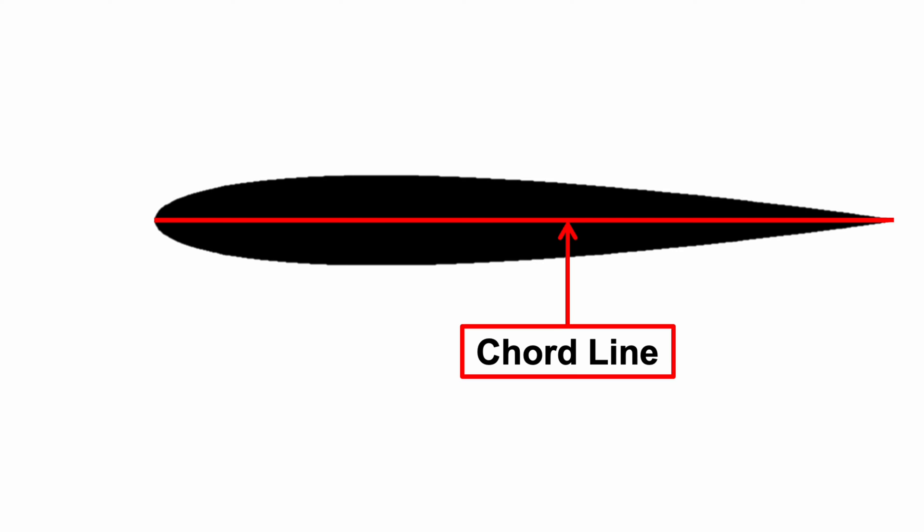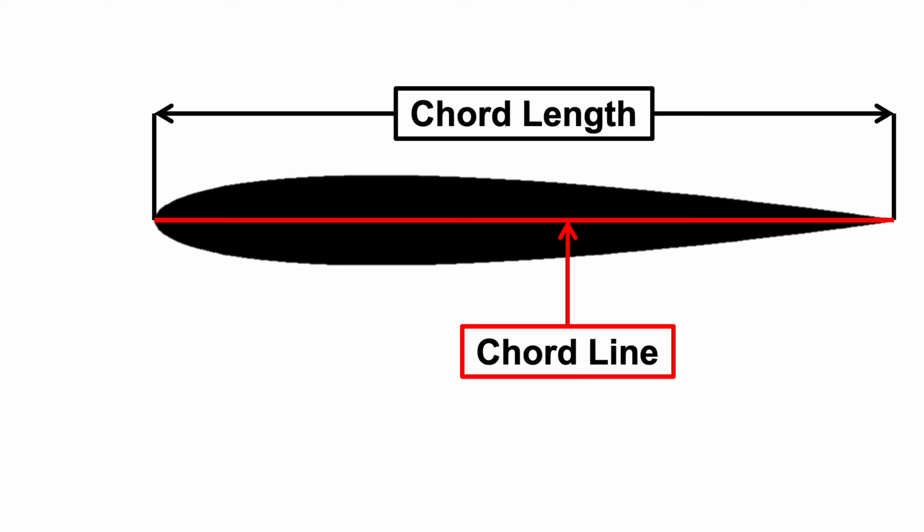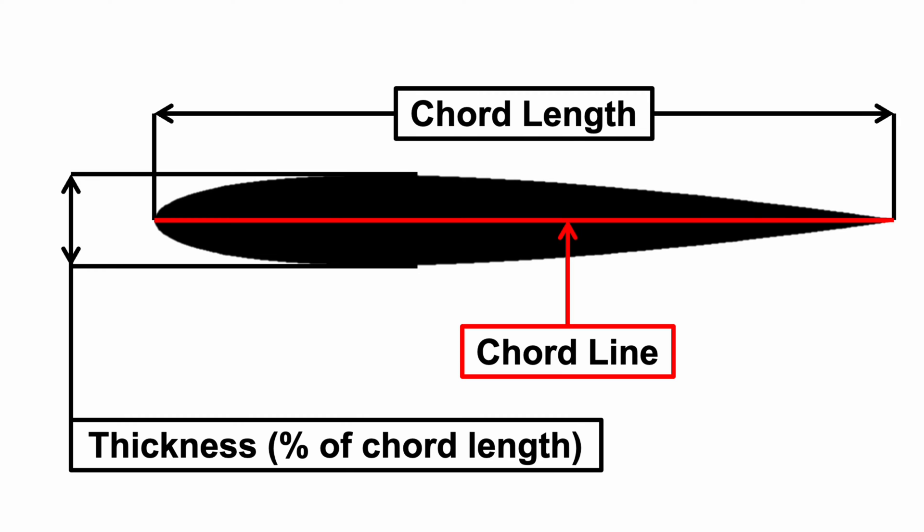We'll start by drawing a line from the leading edge of our airfoil to the trailing edge. This is called the chord line. The distance from the leading edge to the trailing edge is called the chord length. We can also measure the thickness of the airfoil, which is usually expressed as a percentage of the chord length.